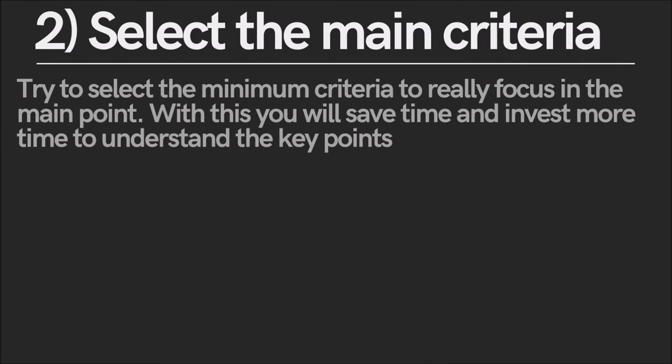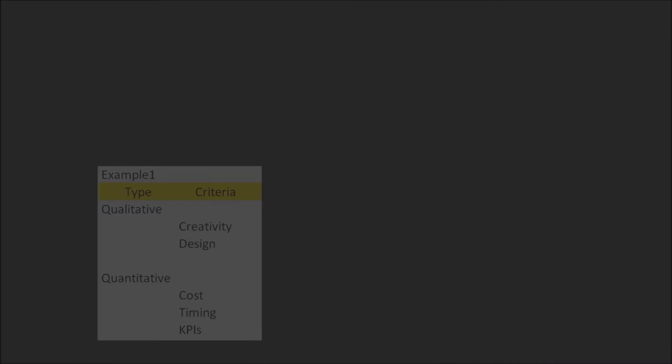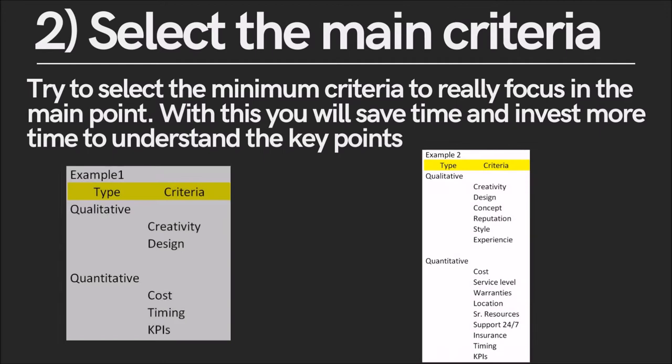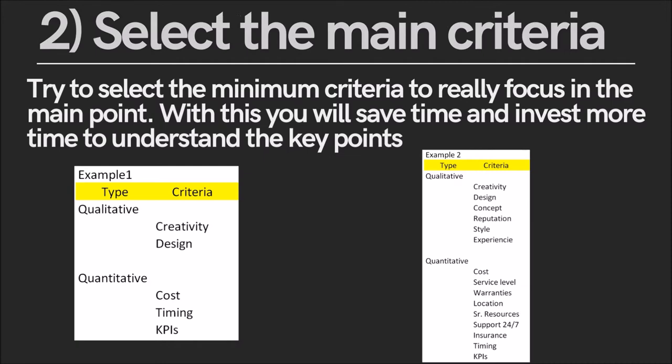Number two, define the main criteria. In order to evaluate the supplier proposals, arrange the criteria by importance and focus on the top criteria. Usually three to five are the key factors to evaluate a proposal. If you select more than ten criteria, the complexity will increase and will take more time to measure. You need to find a balance between the number of criteria versus the time required to evaluate the proposals. Here you can see two examples: a matrix with five criteria and another with fifteen criteria.